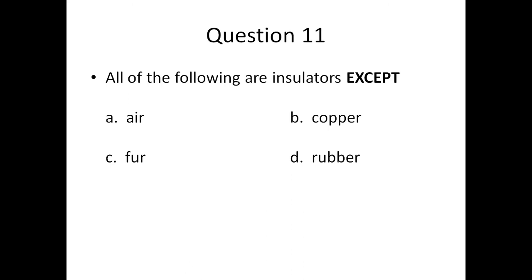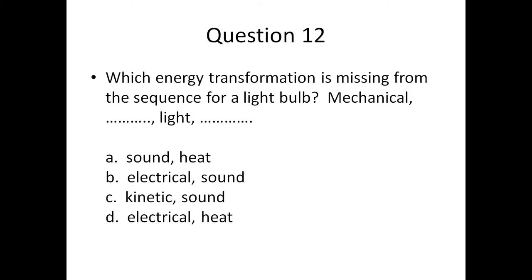Question eleven: all of the following are insulators except — A) air, B) copper, C) fur, or D) rubber. Question twelve: which energy transformation is missing from the sequence for turning on a light bulb? You have mechanical, dash, light, and then dash — A) sound, heat; B) electrical, sound; C) kinetic, sound; or D) electrical, heat.